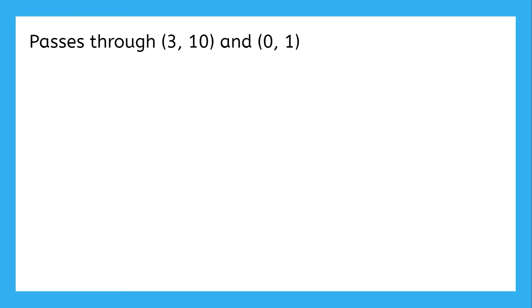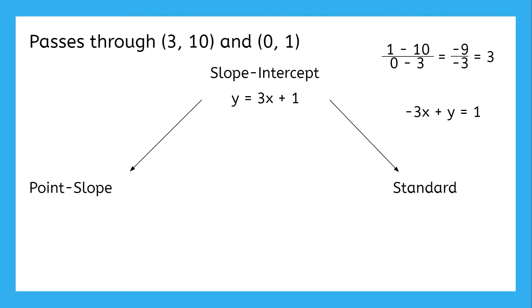For this example, one of the points we have is the y-intercept, so we'll start with slope-intercept form. First, the slope comes out to three, and if we combine that and the y-intercept, we get that the equation is y equals 3x plus one. If we want this in standard form instead, we subtract 3x to the other side, then change all the signs so that the x's coefficient is positive. So the standard form for this equation is 3x minus y equals negative one.